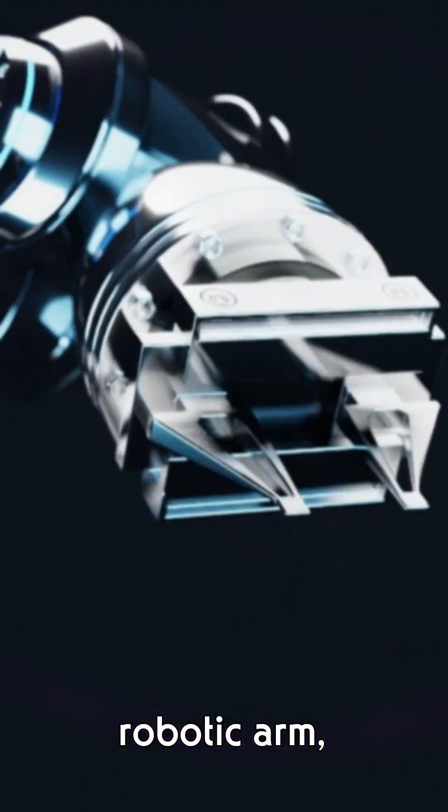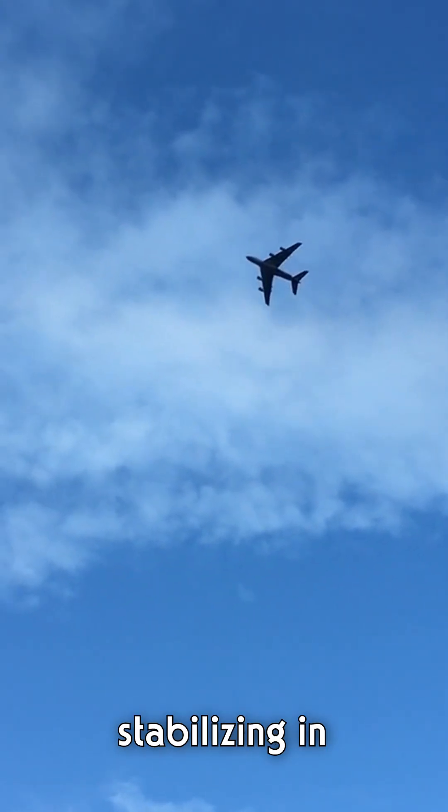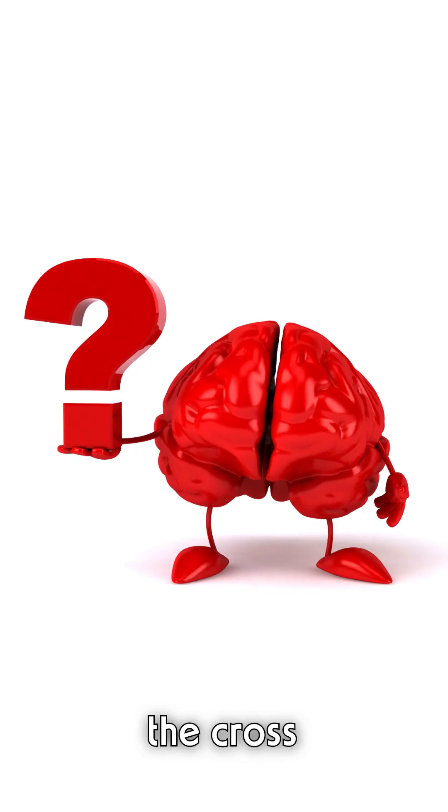What do a rotating cube in a game, a robotic arm, and an airplane stabilizing in flight have in common? The answer is the cross product.